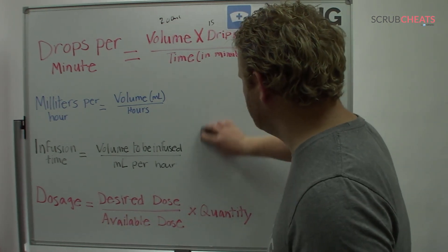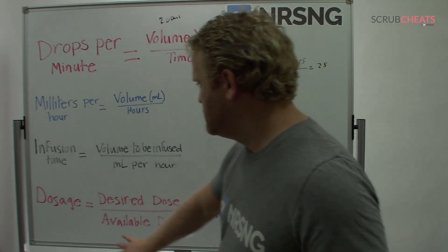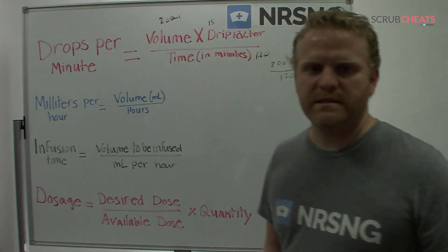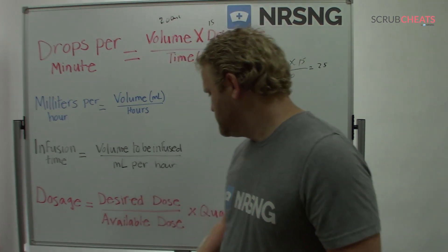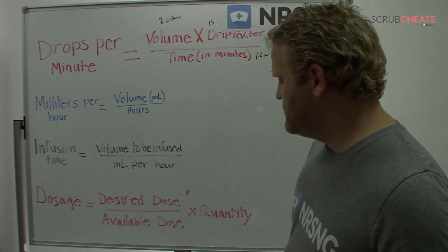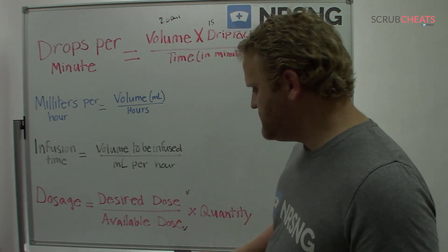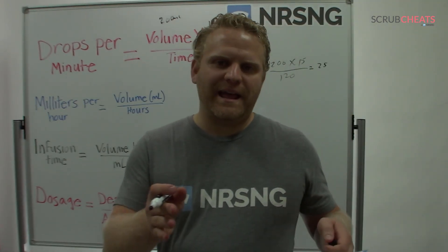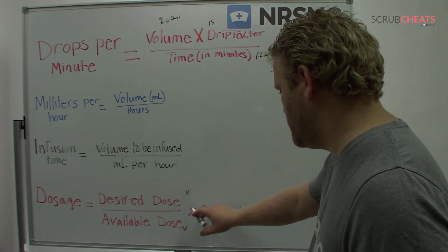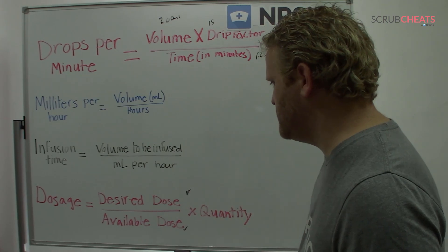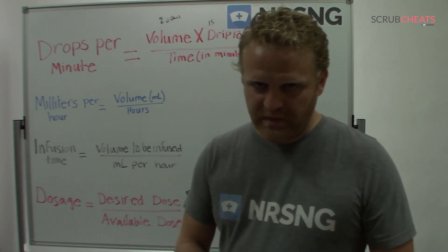Next, let's determine a dose or volume to be administered. To figure out dosage, you need to know the desired dose — how much you actually want to give — and the available dose, meaning how it's packaged or its concentration. It's really about comparing how much you want to give versus how it's supplied. That's all you need for this type of calculation.